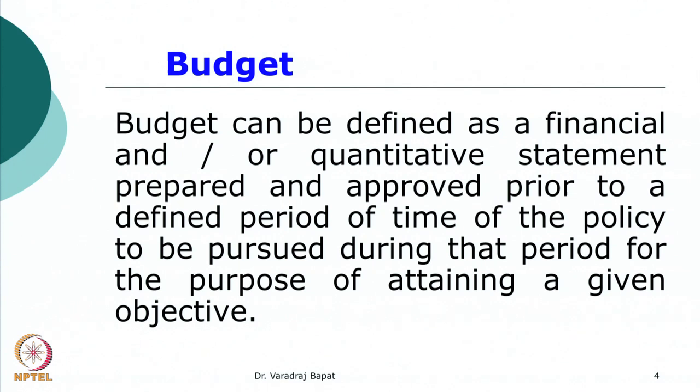Budget can be defined as a financial or quantitative statement prepared and approved prior to a defined period of time, relating to a policy to be pursued during that period for attaining a given objective. For example, if I say that tomorrow it is likely to rain, it is an estimate but not a budget — because there is no particular task being done to make that happen, and it is not a quantitative measure. Even saying it is likely to rain 20 centimeters is still not a budget, because it is not related to any particular purpose.